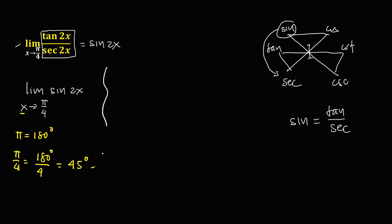So to solve now for the limit, from this equation, we have sine 2 times x, and x is 45 degrees. Then simplify, we have sine 2 times 45, that's 90 degrees. And sine 90 is equal to 1.